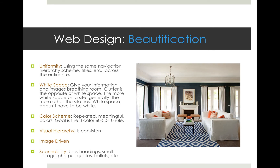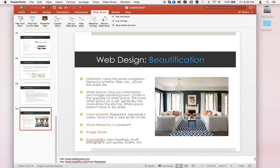The last thing you can always suggest in terms of usability is beautification — though I'd rather you focus on function, since that's more important. If you do run into a website that's just plain ugly, here are some things you could suggest: uniformity — using the same navigation hierarchy and same tiles across the entire site; white space — give your information and images some breathing room, because clutter is terrible; and color scheme — a repeating, meaningful color palette. The goal is the 60-30-10 rule: three primary colors where one dominates at 60%, a secondary at 30%, and an accent at 10%. Visual hierarchy should be consistent and image-driven, and images should generally be clickable.